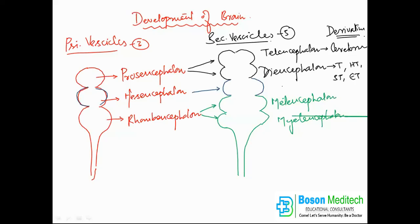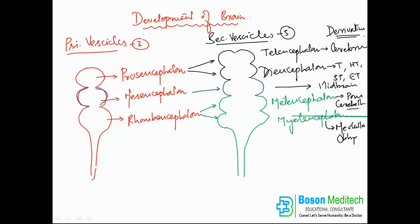The mesencephalon develops into your midbrain. The metencephalon develops into your pons and cerebellum. And finally, the myelencephalon develops into the medulla oblongata, or simply the medulla.